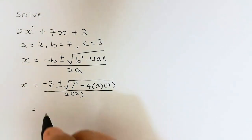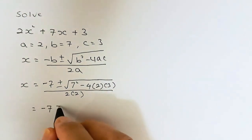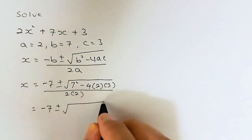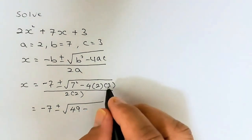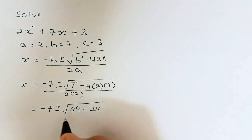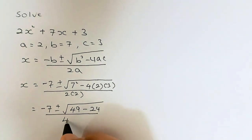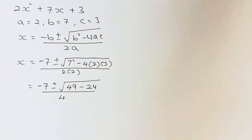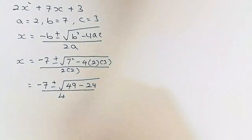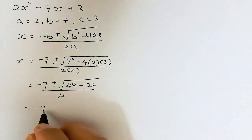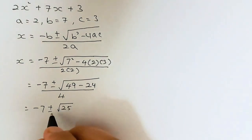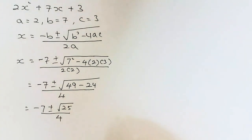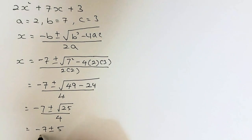Now we simplify. We have minus 7 plus or minus the square root of 7 squared, which is 49, minus 4 times 2 is 8, and 8 times 3 is 24, all divided by 4. Simplifying further, 49 minus 24 gives us 25, so we have the square root of 25 over 4, which simplifies to minus 7 plus or minus 5, all over 4.